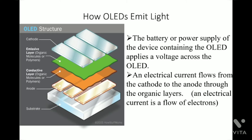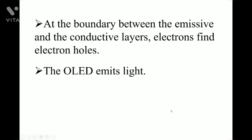How do OLEDs emit light? The battery or power supply of the device containing the OLED applies a voltage across the OLED. An electrical current flows from the cathode to the anode through the organic layer — an electrical current is a flow of electrons. At the boundary between the emission and the conductive layers, electrons find electron holes, and so the OLED emits light.